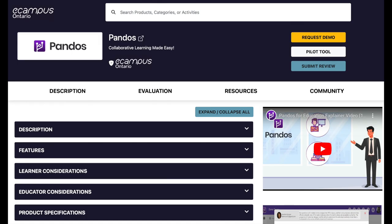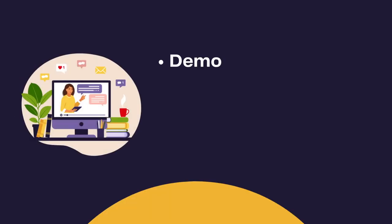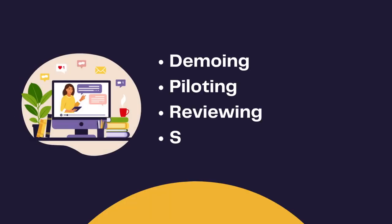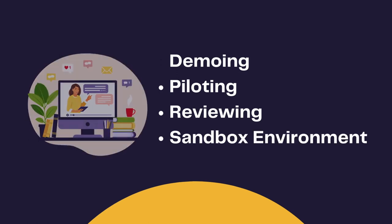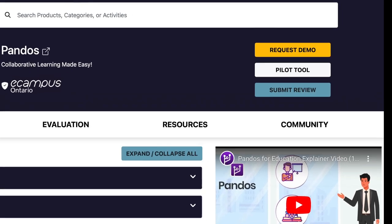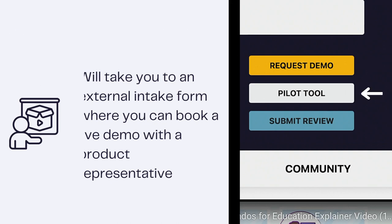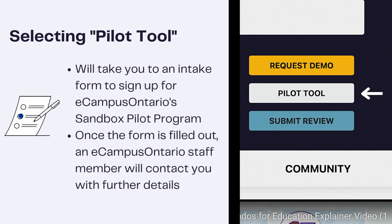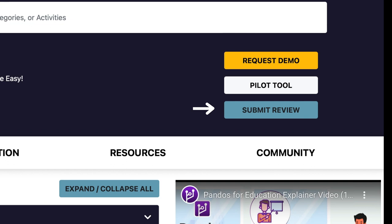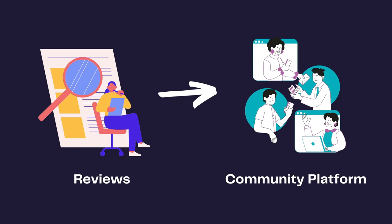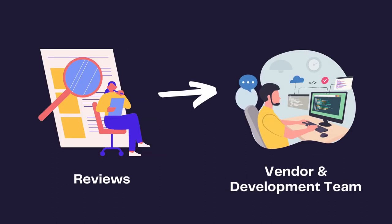If you're interested in learning more about a tool, you have several options to explore, such as demoing, piloting, reviewing, and in some cases testing the technology in a sandbox environment. By selecting Request Demo, you will be taken to an external intake form where you can book a live demo with a product representative. Selecting Pilot Tool will take you to an intake form to sign up for eCampus Ontario's sandbox pilot program; once the form is filled out, an eCampus Ontario staff member will contact you with further details. Visitors can also submit reviews to provide feedback on their experiences with the products. Product reviews may be shared anonymously on the community platform, or with the vendor to provide constructive feedback to the development team.